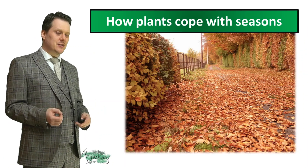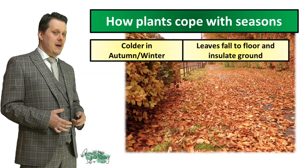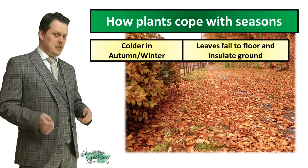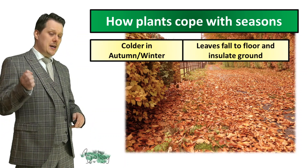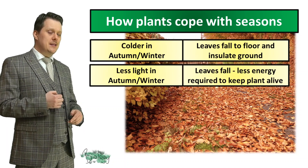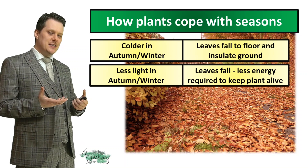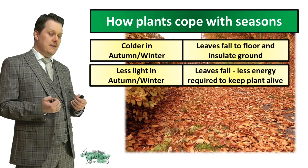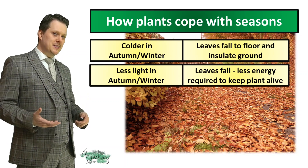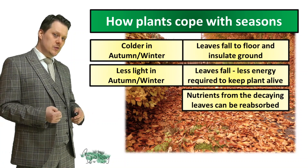So how do plants cope with the seasons? In the autumn and winter months it's a lot colder. When the leaves fall to the floor, it actually insulates the ground, keeping the roots of the plants warmer. Also in autumn and winter there is a lot less light, so when our plants lose their leaves, this means the plant needs to expend less energy keeping the leaves alive. This isn't as wasteful as it may seem, because as these leaves decay, our plants can reabsorb the nutrients from them.